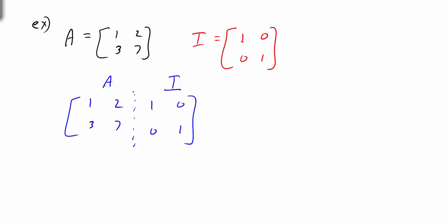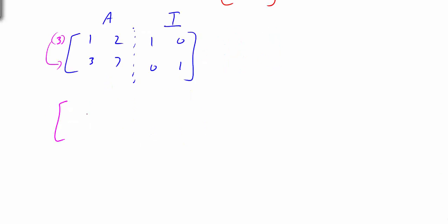I'm going to quickly go through this. We want the first entry to be a 1, which is already a 1. So we want to make the 3 below it a 0. We're going to multiply the first row by negative 3 and add it to the second row. Negative 3 times 1 is negative 3, plus 3 is 0. Negative 3 times 2 is negative 6.